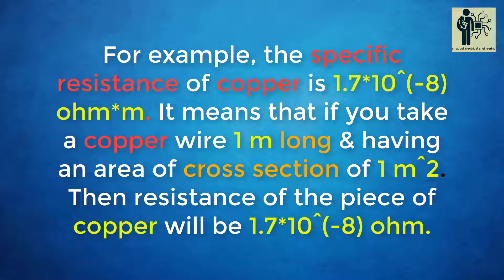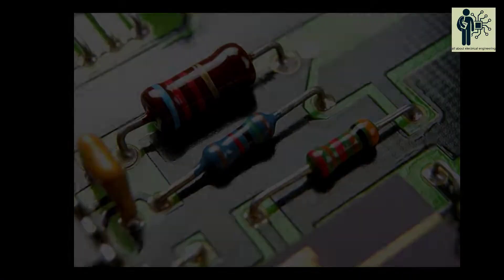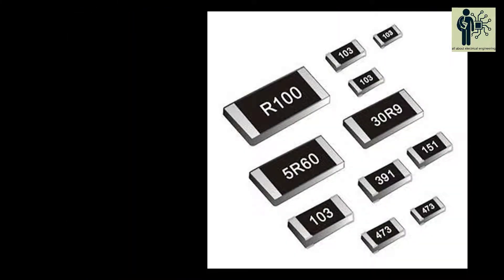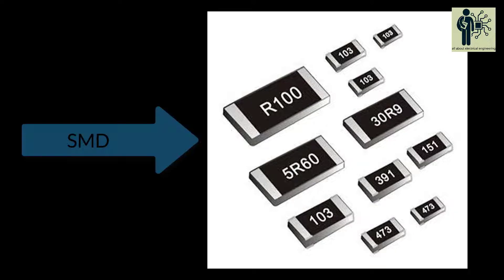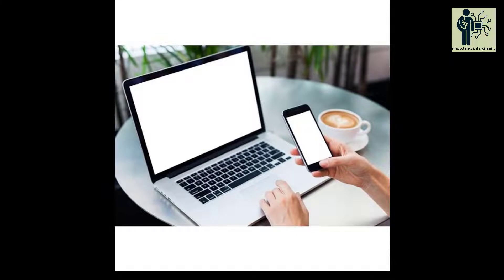Now mainly we use carbon resistors and it looks like this. Nowadays in almost every electronics device, a very small size resistor is used which is called surface mount device or SMD. The purpose of such use is to reduce the size of the electronics device like mobile, laptop, etc.